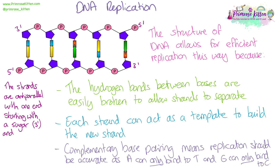You can see this more clearly if we label the ends. One end begins with a sugar — that is known as the three prime end — and one end will end with a phosphate — that's known as the five prime end. On the top strand it's going three prime to five prime, whereas on the bottom strand it's been flipped, going in the opposite direction — anti-parallel.